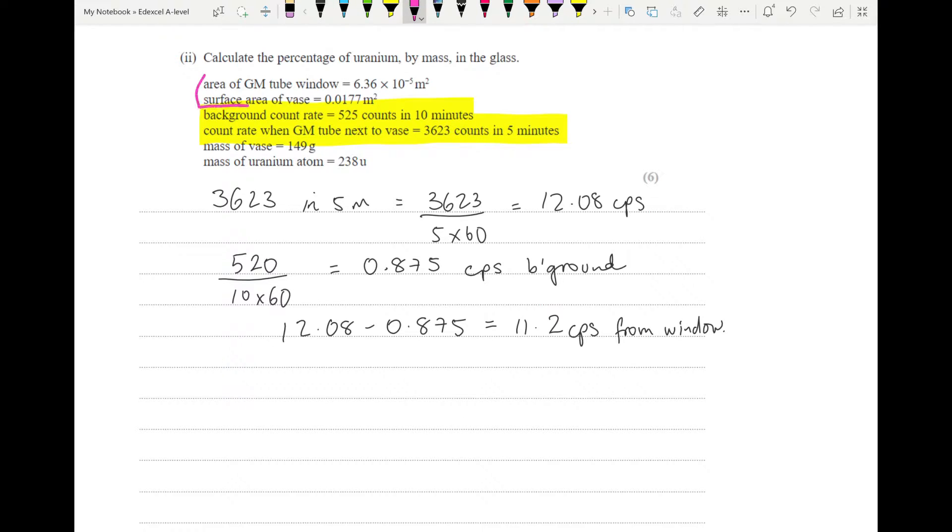The next piece of information we're going to look at is this set of information here. So we're given the area of the GM tube and the surface area of the vase. And we want to know what the count rate from the whole vase is. So we have to scale this count rate up to the surface area of the vase. So what we're going to do is find the multiplication factor between these two. So we take our surface area of the vase and divide it by the area of the window, that will give us a multiplication factor, which is 278.3. Now we multiply that by 11.2 so that we can scale it all up and we get 3,117 counts per second. That is for the whole vase, and we should consider that our activity. That is the number of decays per second that is happening for the uranium in the whole vase.